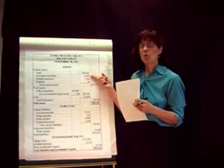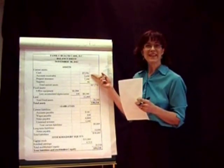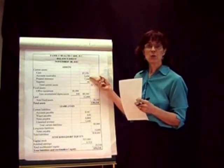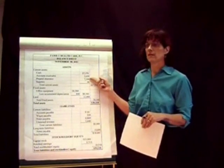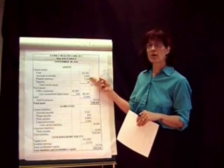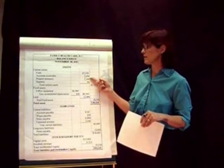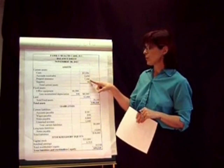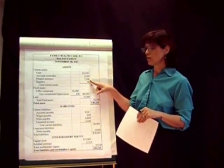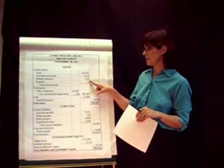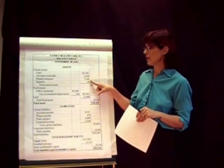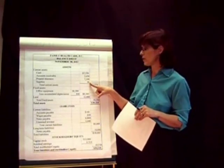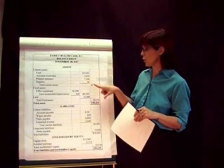I don't know any asset more used up within the year than cash — it's constantly coming in and out. Next we have accounts receivable, which is money owed to us by our customers, usually expected within 30 days, so that's definitely a current asset. Prepaid insurance and supplies are also current assets, since we generally don't pay those more than a year in advance.